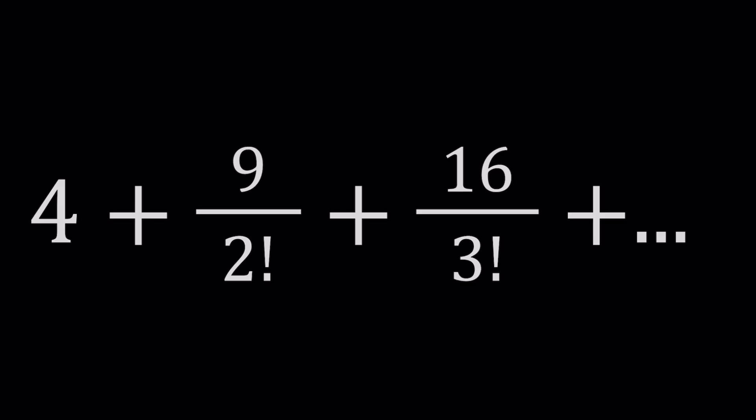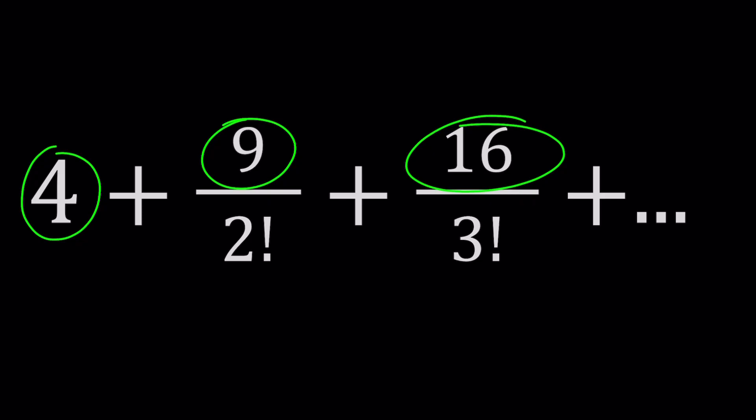What are these numbers? The numerators are 4, 9, 16, 25, and so forth—those are perfect squares. The denominators are factorials, but the original numbers differ by 1, which means you take 3 squared and divide by 2 factorial, you take 4 squared and divide by 3 factorial.